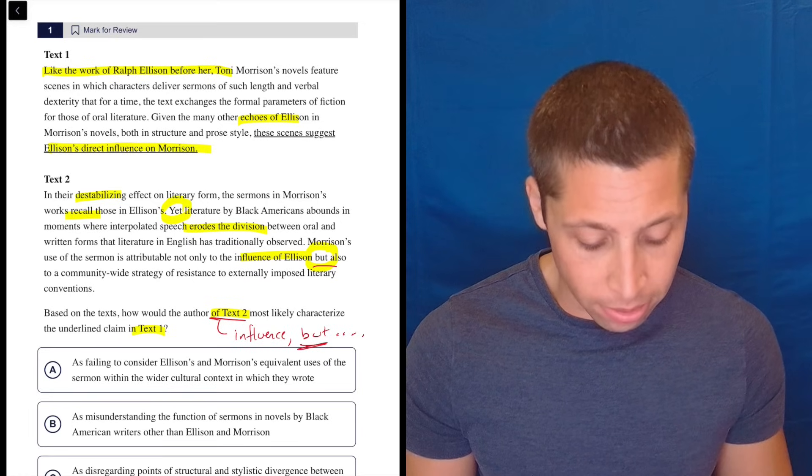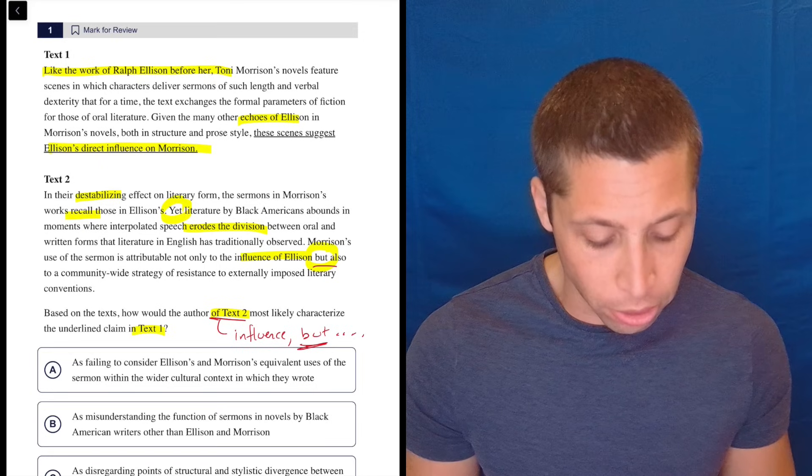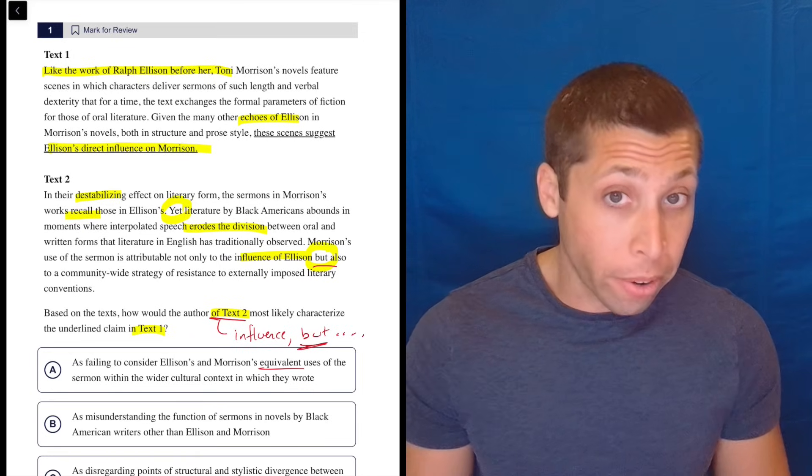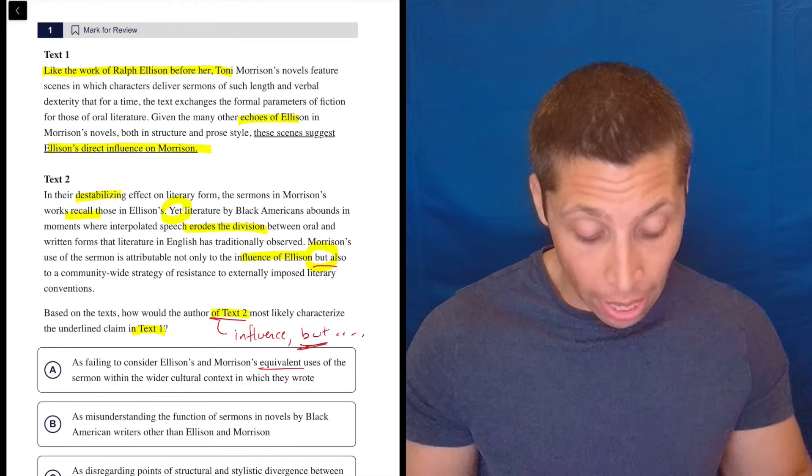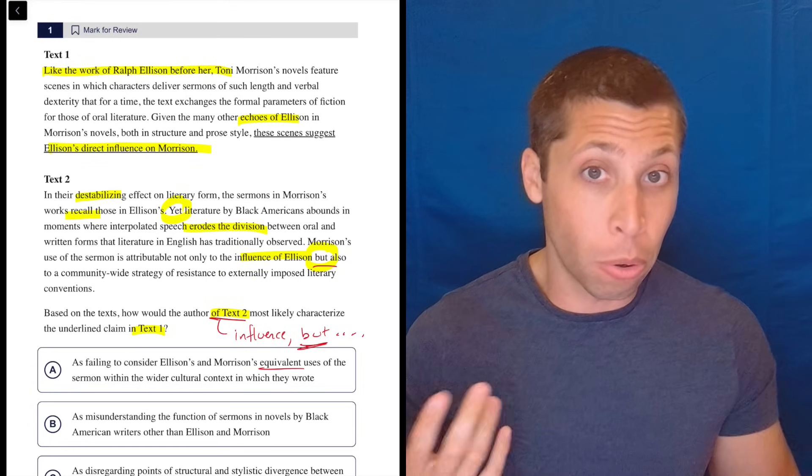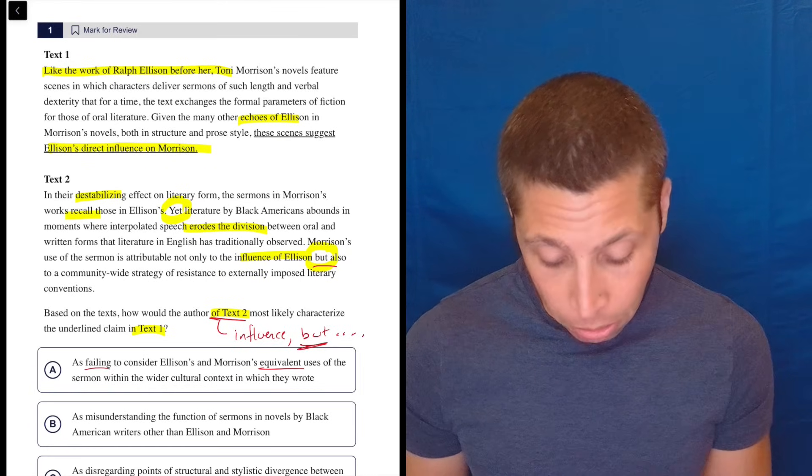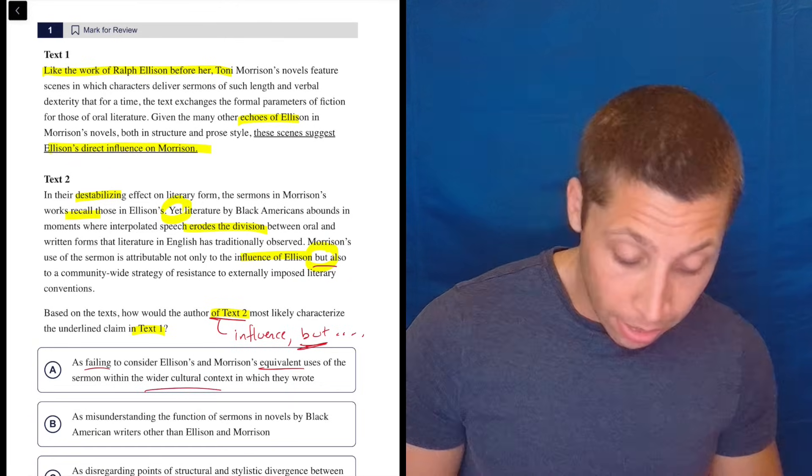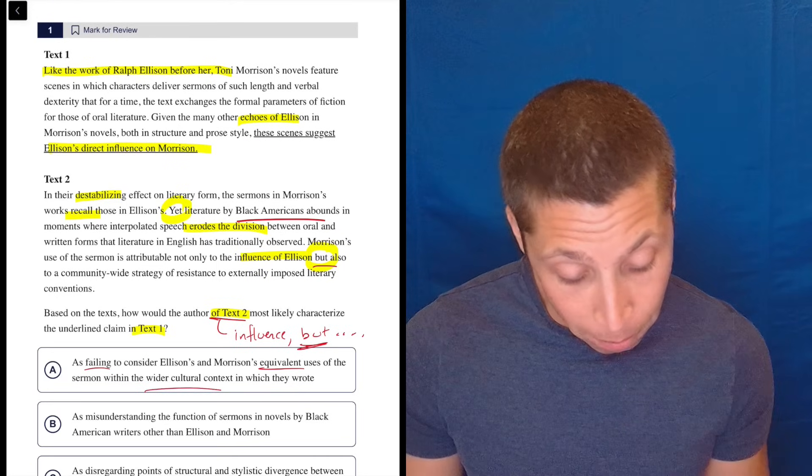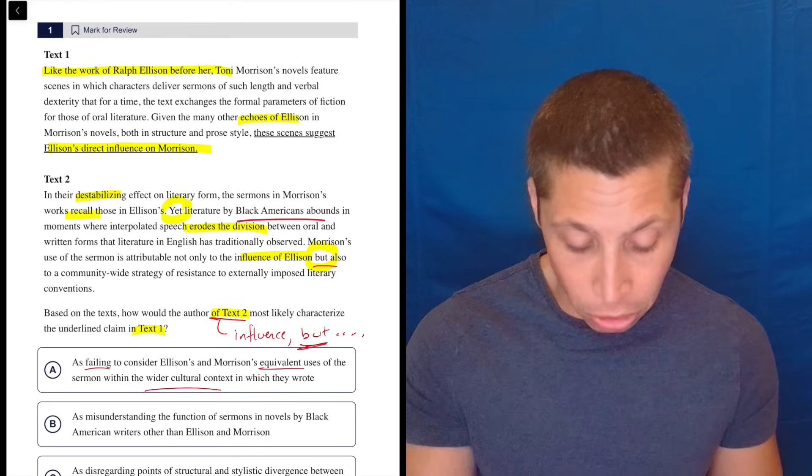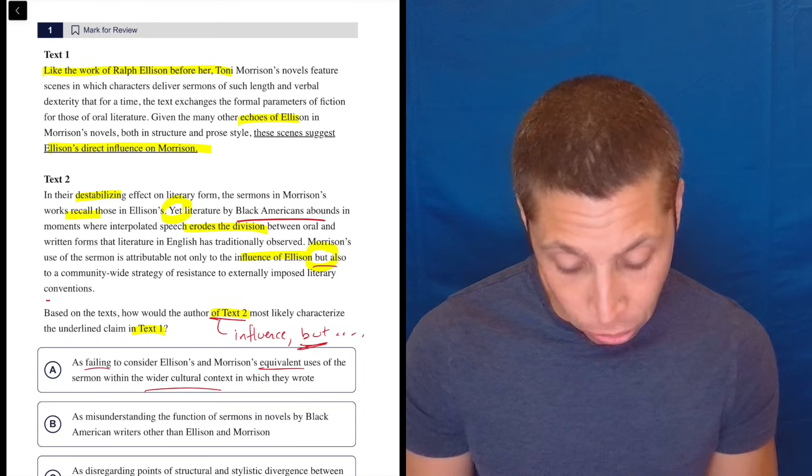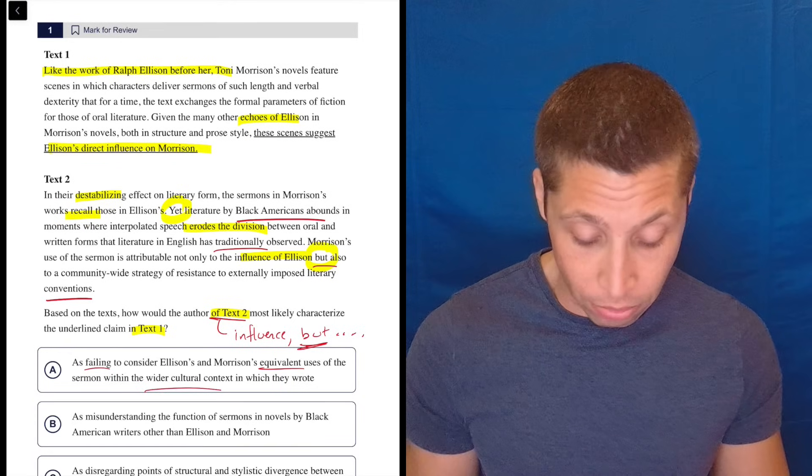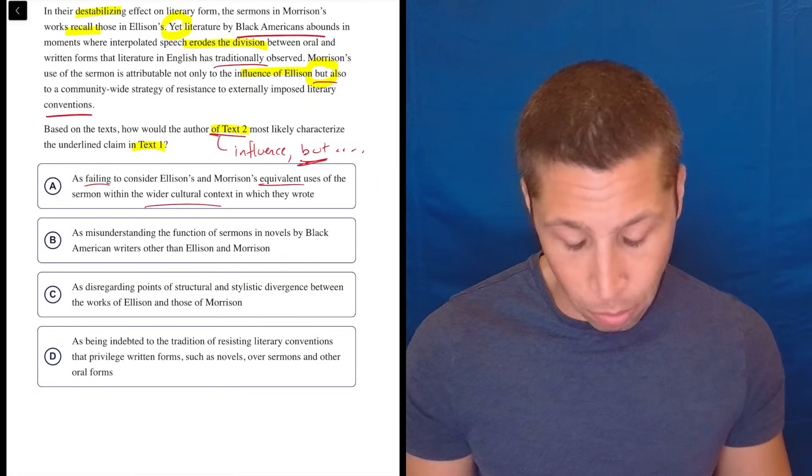A, as failing to consider Ellison's and Morrison's equivalent uses of the sermon within the wider cultural context in which they wrote. Equivalent is a word that scares me. It's a bit of a quantifier. It's saying two things are equal. Are they truly equal? I don't know. They did say that they were similar to each other. So maybe that's enough. But failing is pretty strong. That means you're missing something. It did talk about black Americans abounding in moments or literature by them abounding in moments. That's maybe broader. There's something about traditions and conventions. I don't know. I still don't understand it. So I can't eliminate A.